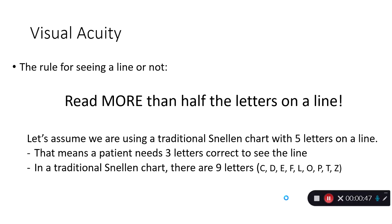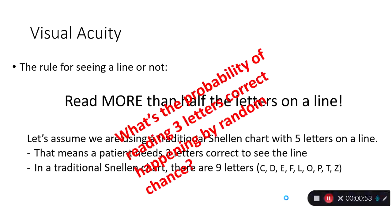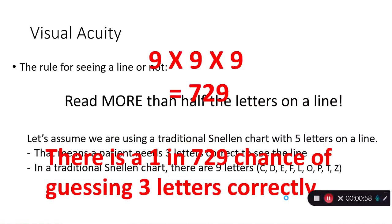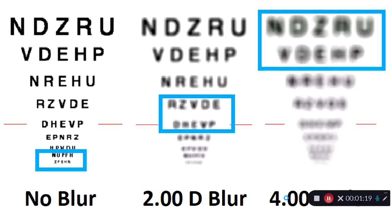In a traditional Snellen chart, that means there are nine letters, C-D-E-F-L-O-P-T-Z. What's the probability of reading three letters correctly by random chance? Well, that's 9 times 9 times 9, or 729. So there's a 1 in 729 chance of guessing three letters correctly out of a five-letter choice. So it's statistically very unlikely if the person can read three letters, they probably can read the whole line. And that's why we consider that the rule for visual acuity.